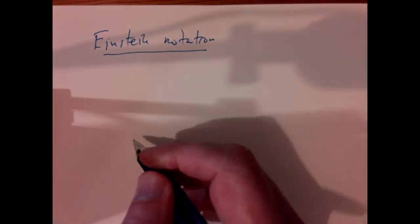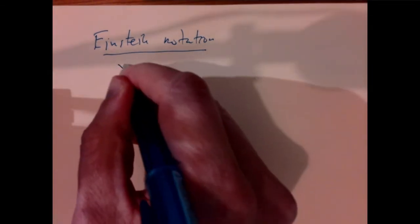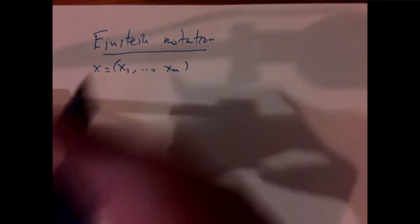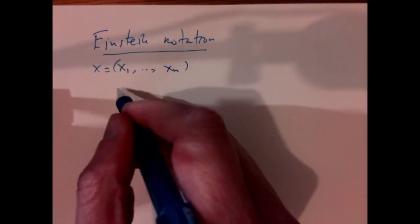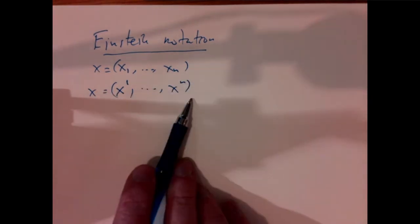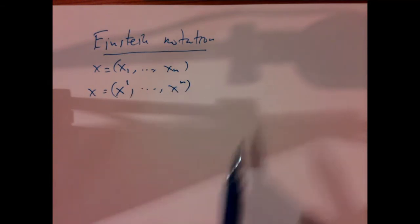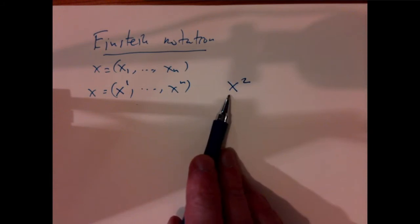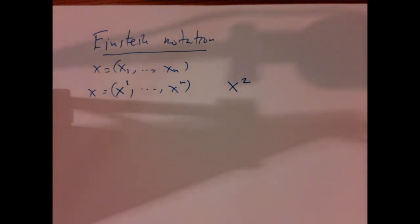Before we start thinking about vector fields, let's think first about some notation — Einstein's notation. Instead of writing the coordinates of a point in Rⁿ as x₁ through xₙ with subscripts, we'll write them using superscripts: x¹ to xⁿ. This is standard due to Einstein, so it's unavoidable. It has a disadvantage: x² no longer means x squared — it means the second component of the vector x.